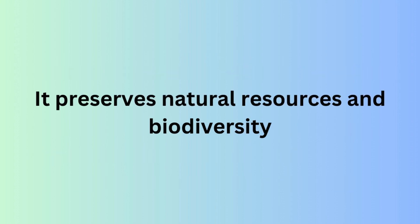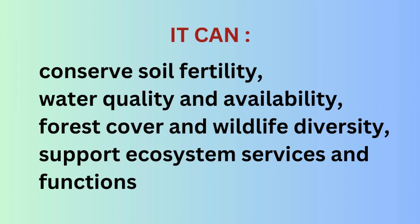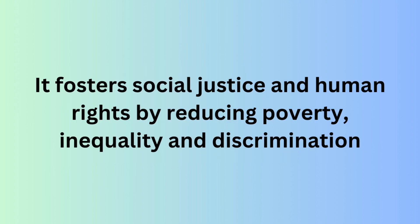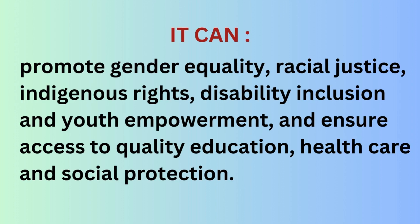It preserves natural resources and biodiversity by preventing over-exploitation, pollution, and habitat loss. For example, sustainable development can conserve soil fertility, water quality and availability, forest cover, and wildlife diversity, and support ecosystem services and functions. It fosters social justice and human rights by reducing poverty, inequality, and discrimination, enhancing participation, empowerment, and education. It ensures quality education, health care, and social protection.